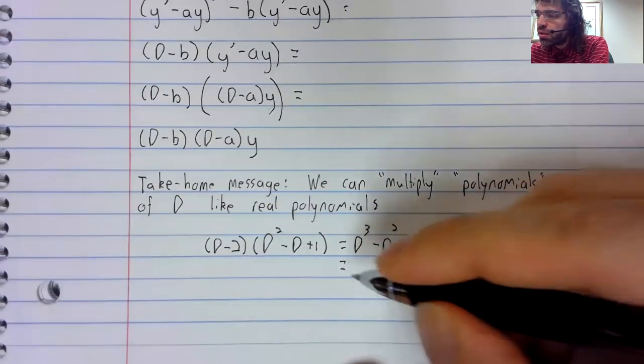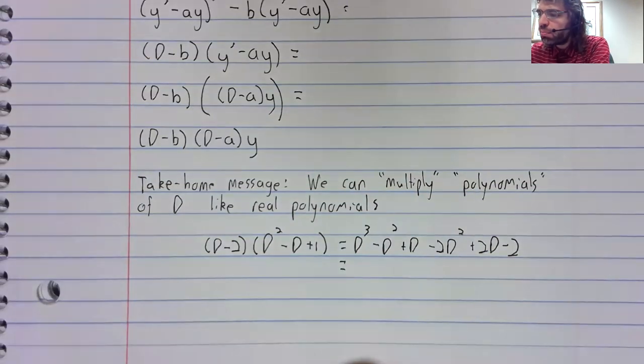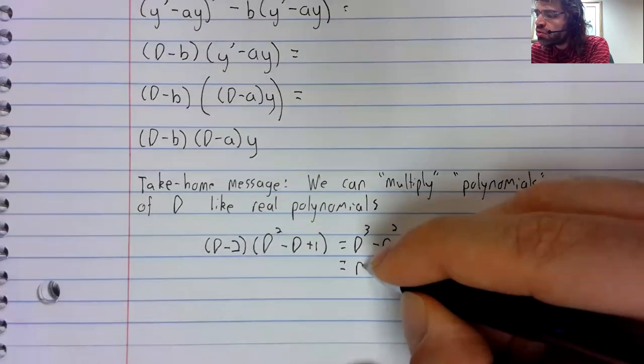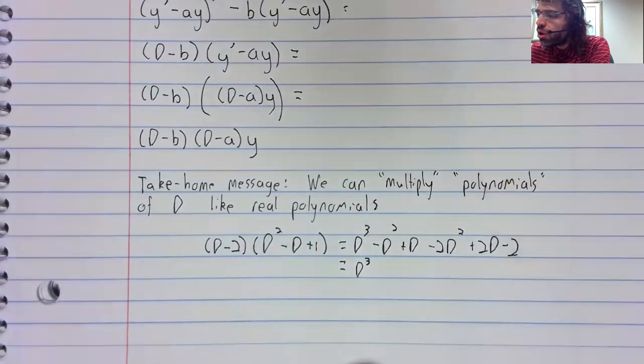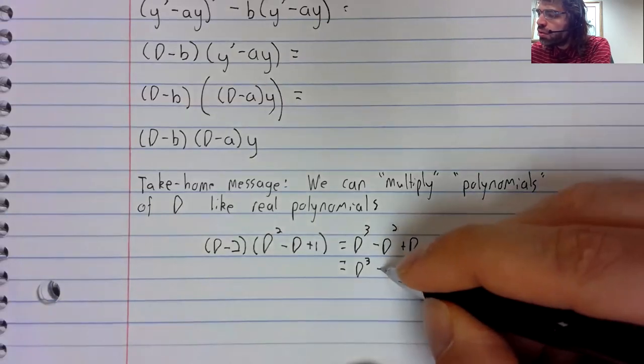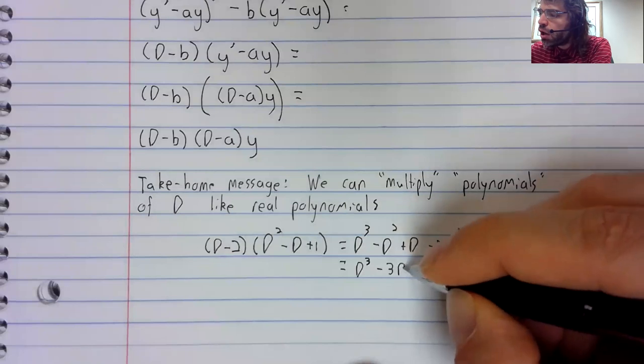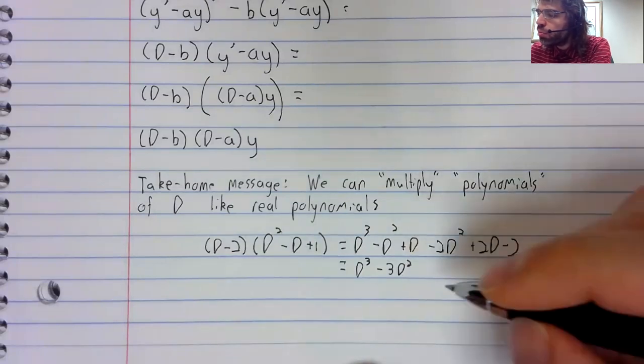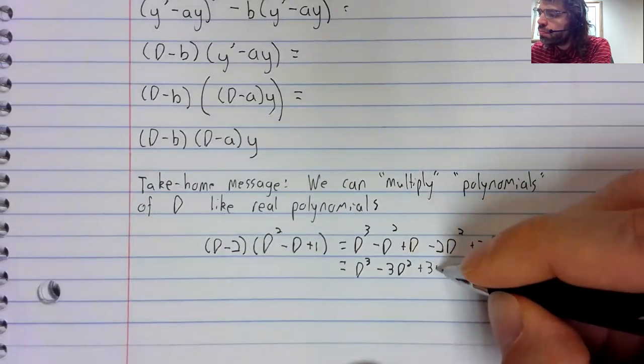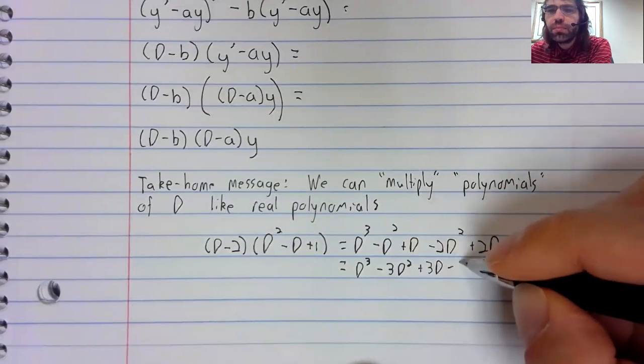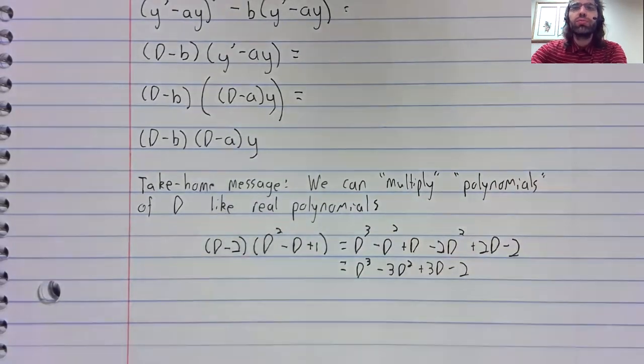We can multiply, we can combine like terms, all the stuff we could do if this were a real polynomial we can do.